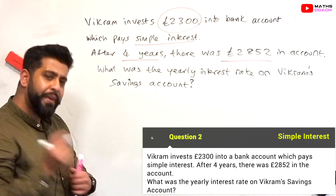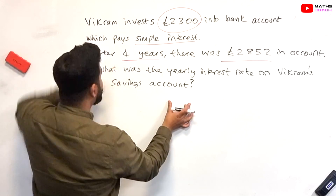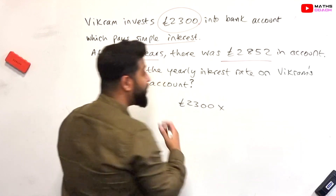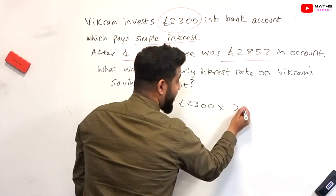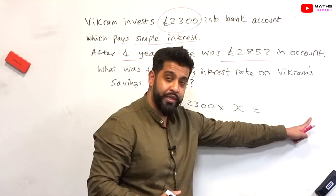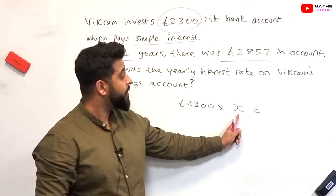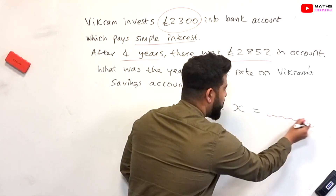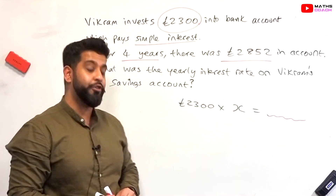To solve this question we can use our formula: original amount times by the multiplier equals new amount. Our original amount is £2,300. We don't know the multiplier — that's what we're trying to find — so we write X for the unknown. We need a value for the amount at the end of the first year after simple interest is paid.